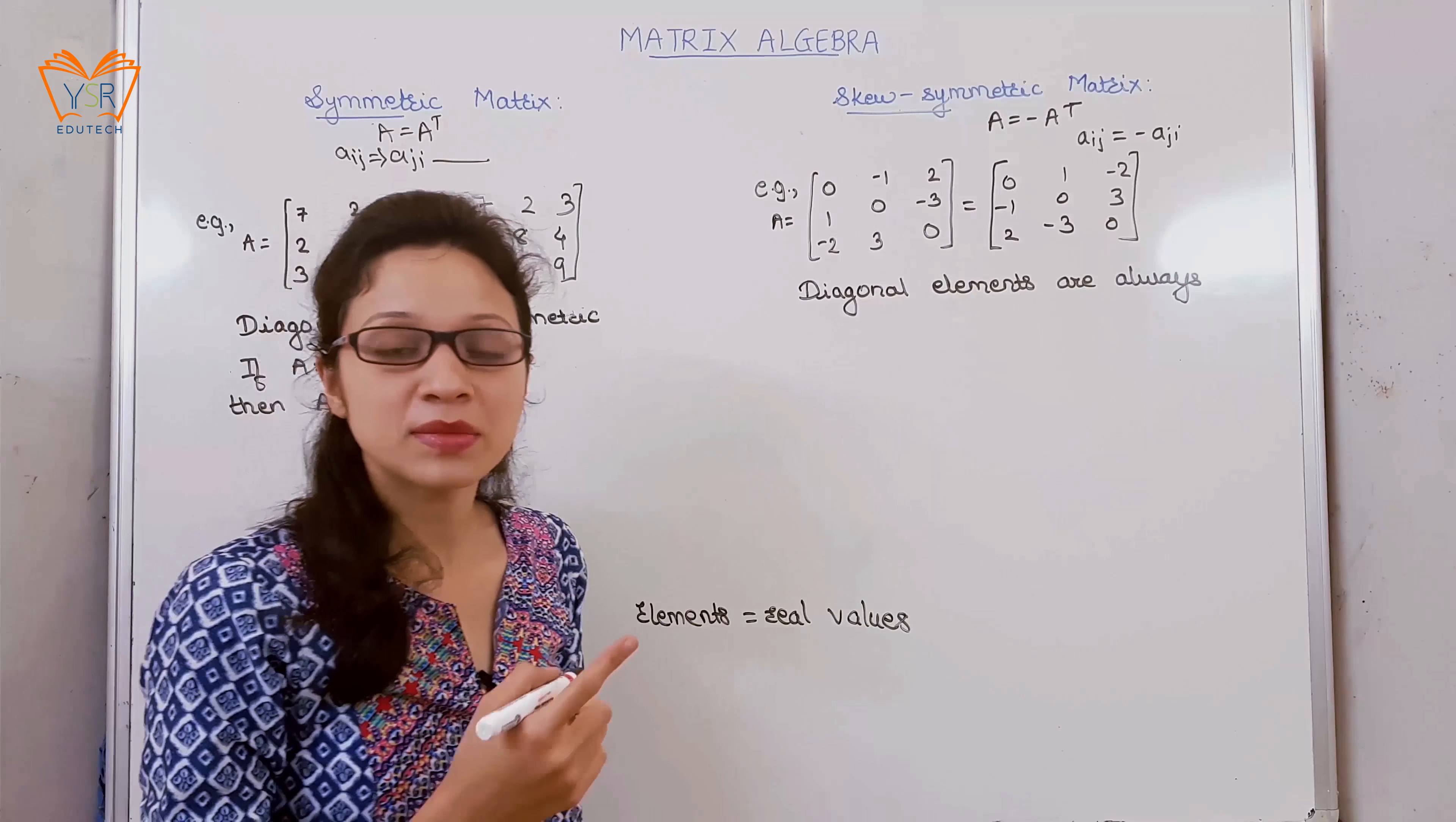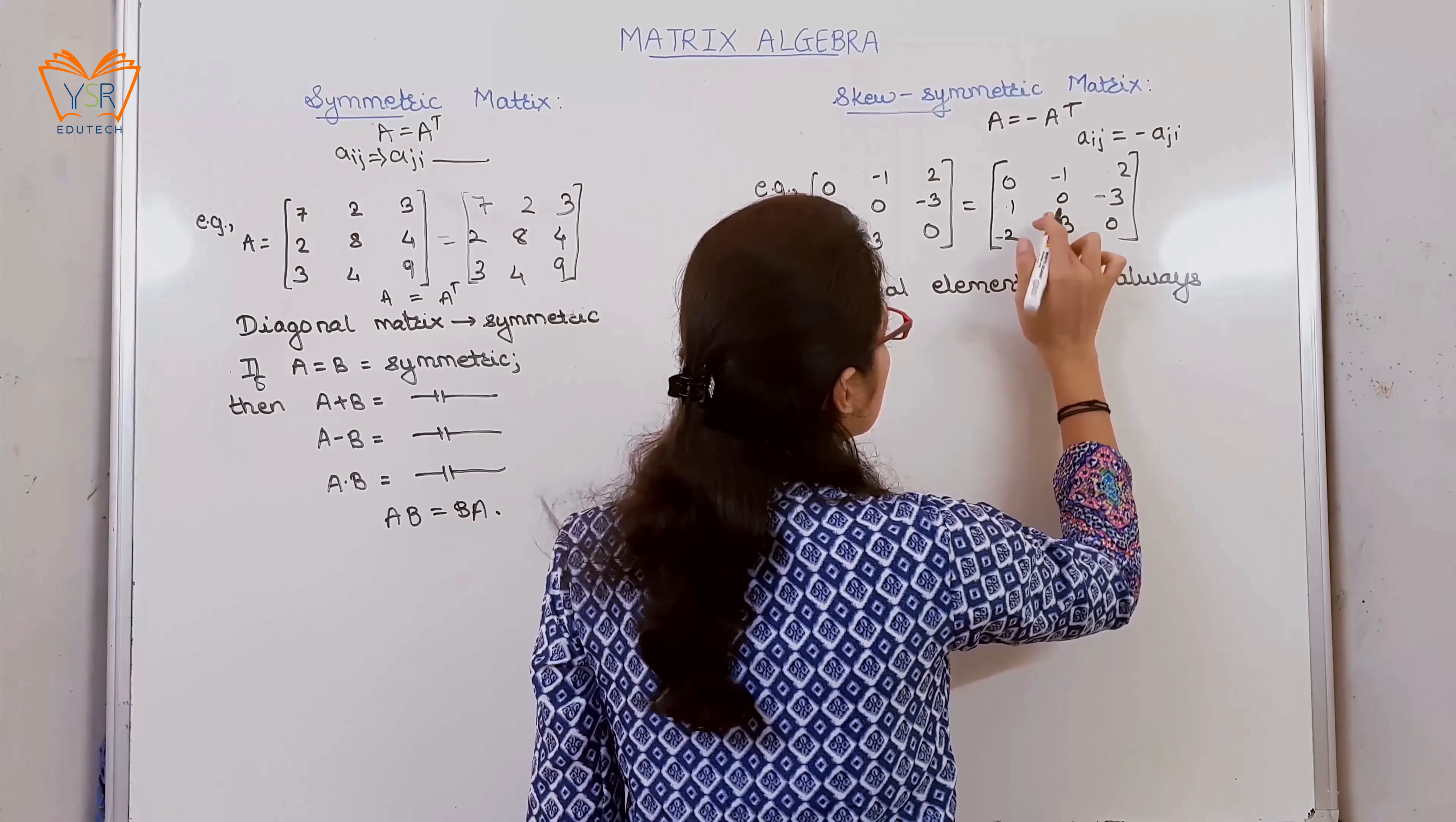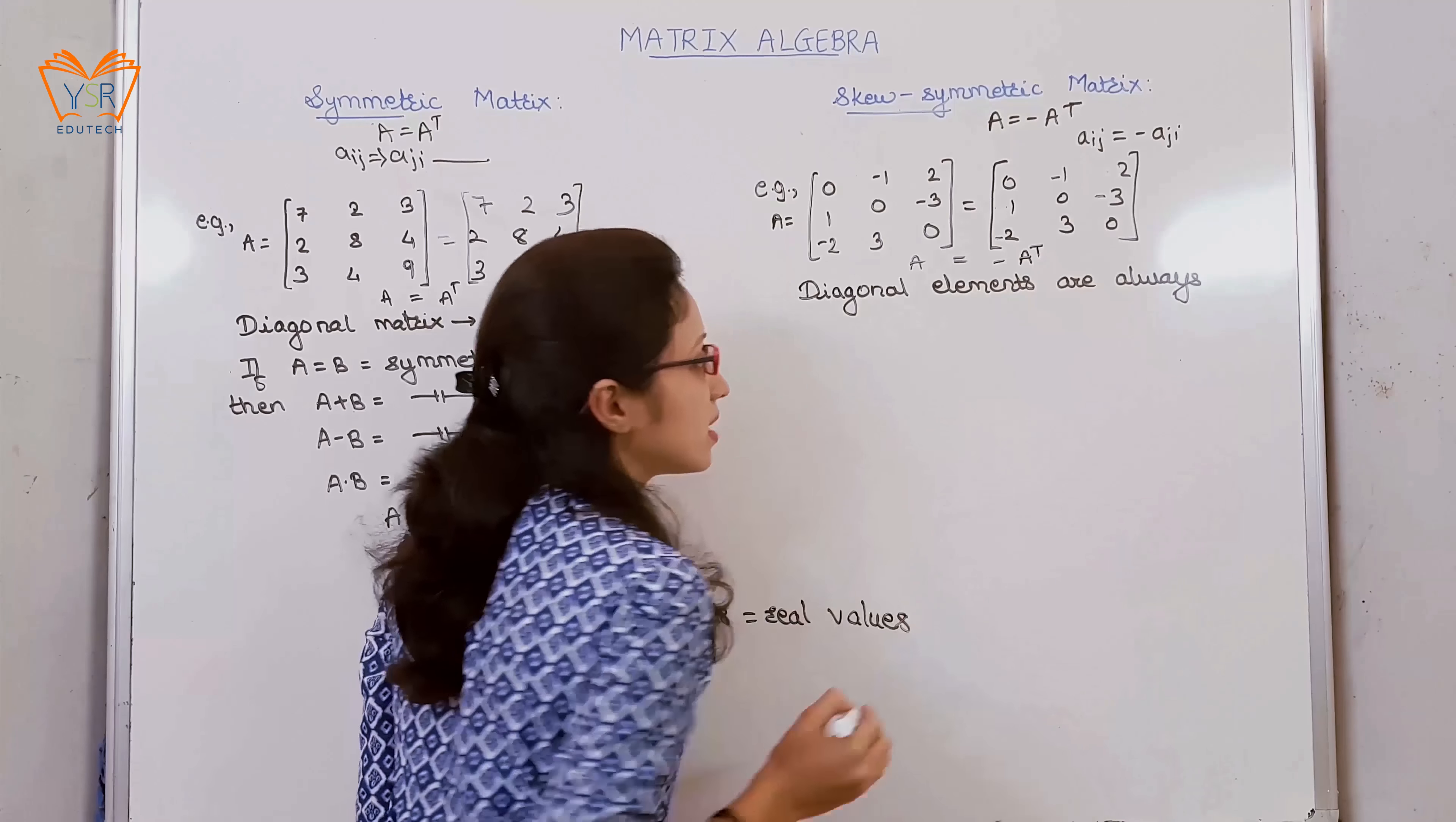To find out the negative, simply multiply each element by its negative value. Now we can see that A is equal to minus A transpose.